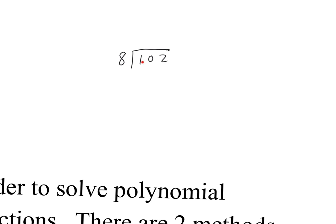Does 8 go into 1? No. So we go to the next two digits: 10. Does 8 go into 10? It does — one time. We do 1 times 8, which is 8, and write it down. Then we subtract: 10 minus 8 is 2. Since 8 doesn't go into 2, we carry down the next digit, which is 2, giving us 22.